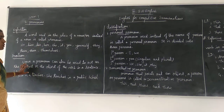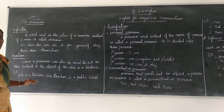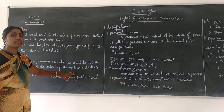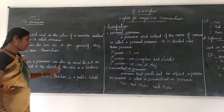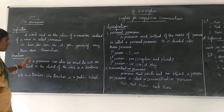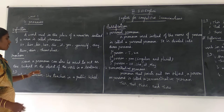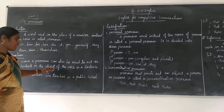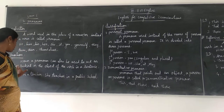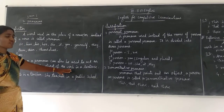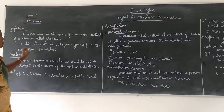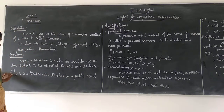In the same way, in noun also you are using the noun in subject, then object, and then complement. The same way, in pronoun also you are using the pronoun in subject, or object, or it comes with the verb, because this pronoun is based upon the verb, or after the verb you are using this pronoun.